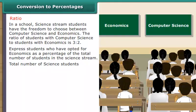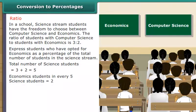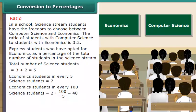Total number of science students is equal to 3 plus 2, which is equal to 5. Economics students in every 5 science students is equal to 2. Economics students in every 100 science students is equal to 2 upon 5 into 100, which equals 40. Therefore, 40% of the science students have opted for economics.